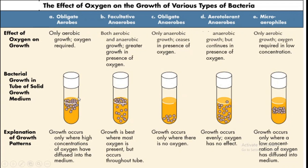We saw five classes of microorganisms based on the requirement of oxygen, and they can be pictorially represented as follows. If they are grown in a culture tube containing broth, obligate aerobes are usually seen on the topmost layer because they require oxygen for growth. Facultative anaerobes can be seen throughout the tube but grow better on the topmost layer, so more amounts are seen at the top while they also grow uniformly in the culture tube. Obligate anaerobes are killed by oxygen so they occupy the bottommost layer.